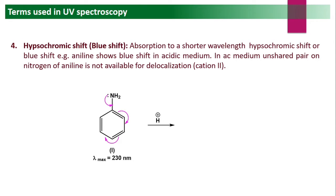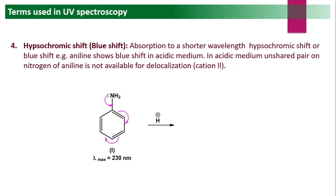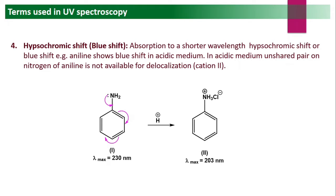For example, aniline shows a +R resonance effect — the NH2 lone pair donates electrons to the benzene ring and it absorbs at around 213 nm. However, in acidic medium, the lone pair on nitrogen gets protonated, forming anilinium chloride. Now there is no unshared electron pair on nitrogen, so delocalization is lost, resonance decreases, and lambda max decreases — absorption shifts to a shorter wavelength. This is hypsochromic shift or blue shift.